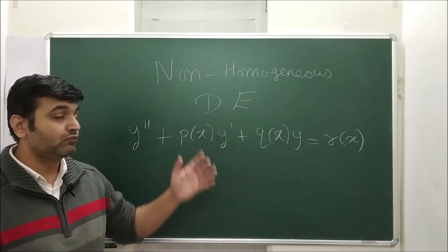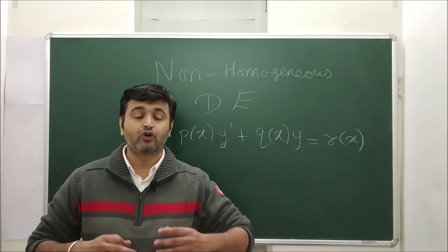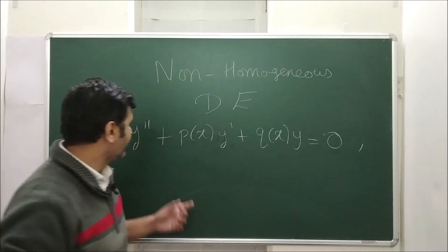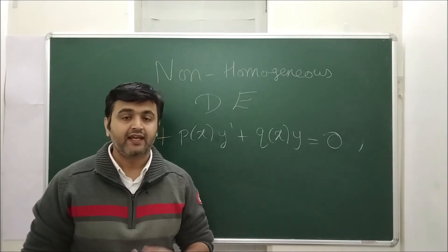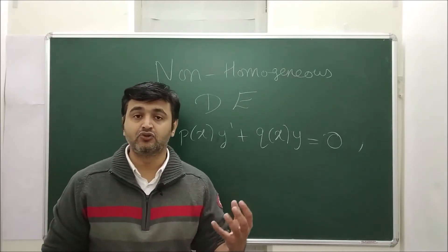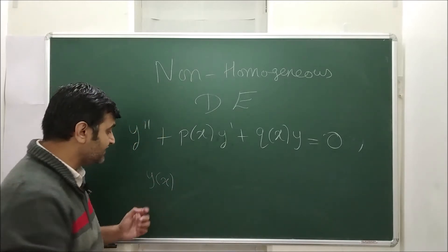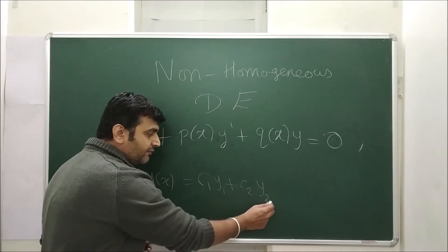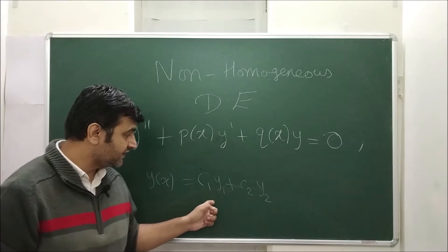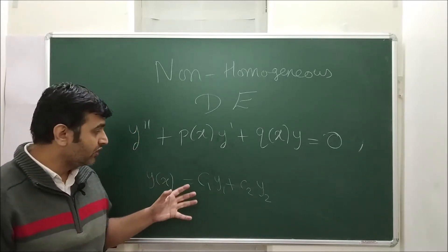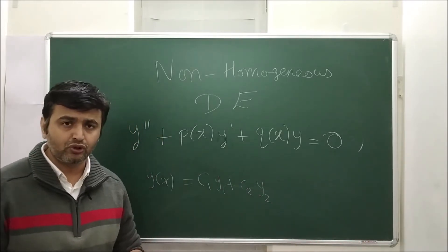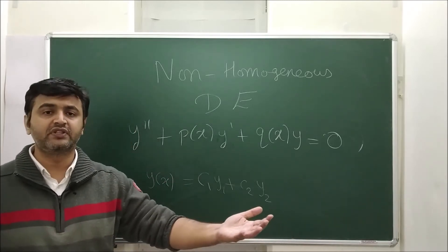Today we are going to talk about non-homogeneous differential equations. In earlier lectures we talked about homogeneous linear differential equations, where the right side is zero — that's a second order linear homogeneous differential equation. The general solution is a linear combination of linearly independent solutions: c1y1 + c2y2 for second order, three solutions for third order, four for fourth order, and so on for nth order.